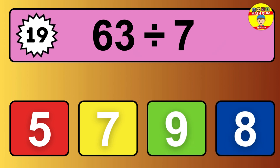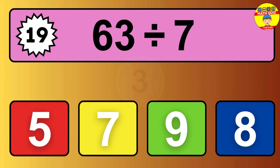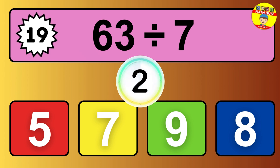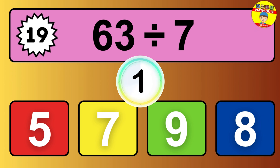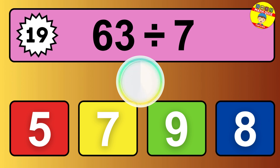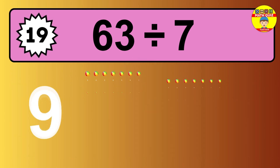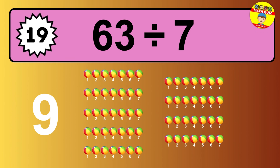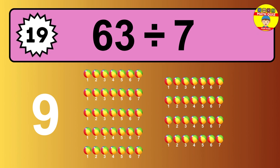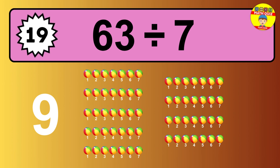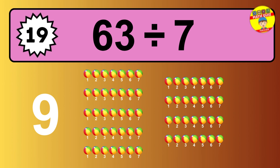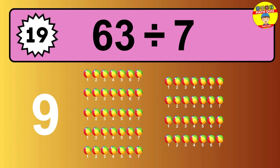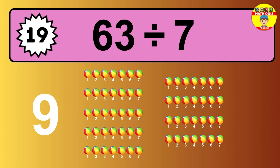63 divided by 7 — time to think. Let's go to the solution. Divide the number 63 by 7. Each group contains 7 units, so dividing 63 by 7 results in 9 equal groups. Thus, the result is 63 divided by 7 equals 9.